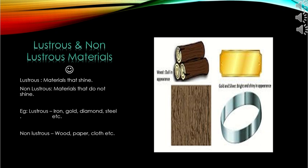Lustrous and non-lustrous materials. Lustrous materials are materials that shine. Non-lustrous materials are materials that do not shine. Examples of lustrous materials are iron, gold, diamonds, etc. Examples of non-lustrous materials are wood, potatoes, clothes, etc.